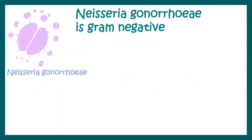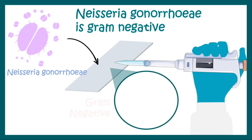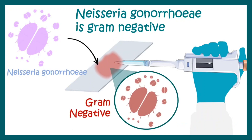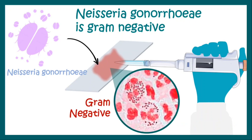Neisseria gonorrhoeae is gram-negative, which means if you stain it on a slide with gram stain, you get to see gram-negative diplococci. This is the original microscopic picture of that.